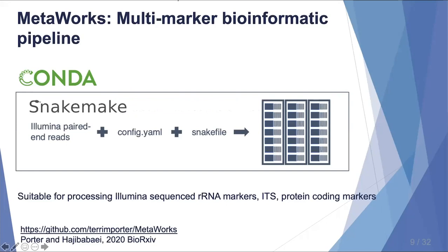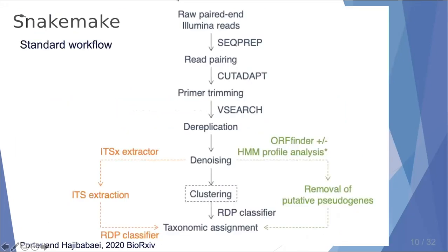Our pipeline is called MetaWorks. It's suitable for processing Illumina sequencing ribosomal RNA markers, ITS, and what makes this new is it's also suitable for processing protein coding markers. It uses a Snakemake workflow, and the steps are pretty standard in the field, but what's new is the branch on the right in green, where we remove putative pseudogenes.